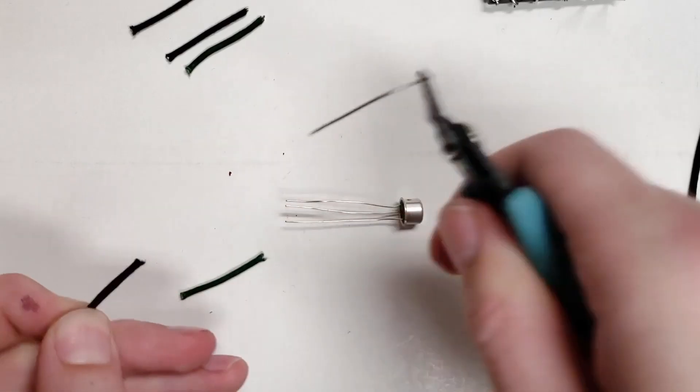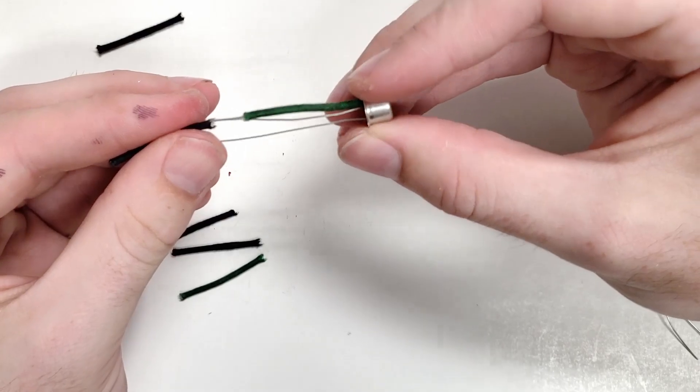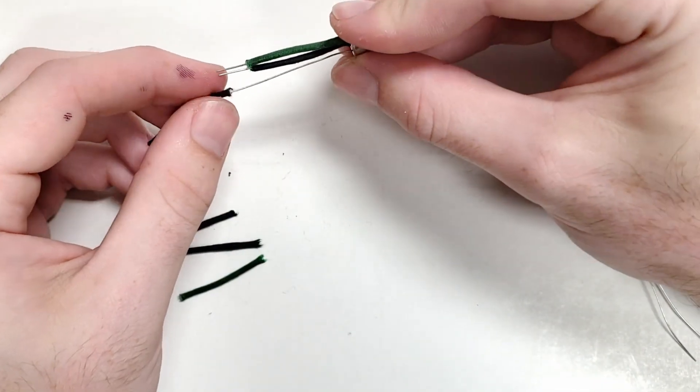This can then be slid over the legs of the transistors. I'm using green here to mark the collector.